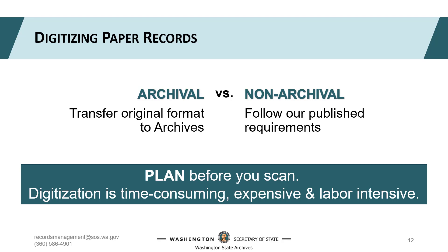Many state and local government agencies are caught between paper and digital processes. As your office goes digital, it's important to consider how you'll manage the paper backlog. If the records are designated archival, you have several options, each of which relieves you of your legal responsibility to care for those records. You can transfer archival paper or digital records to the Washington State Archives at the end of their retention period. If you have archival paper originals and digital scans, offer it all to the archives — we can take the paper originals early, while you hold onto the scans until they've met retention.